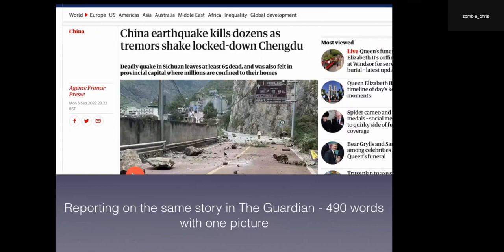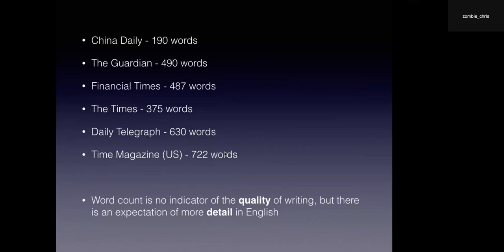There was a lot more analysis and detail in the English version. The number of words is no indicator of quality, but there is an expectation of more detail in English. The Times had 375 words — the shortest I could find in English. China Daily had 190 words, so even the two shortest reports, the English version was almost twice as long. Time magazine went out to 722 words. We do see a lot more information and detail in English language reports than in the Chinese reports.